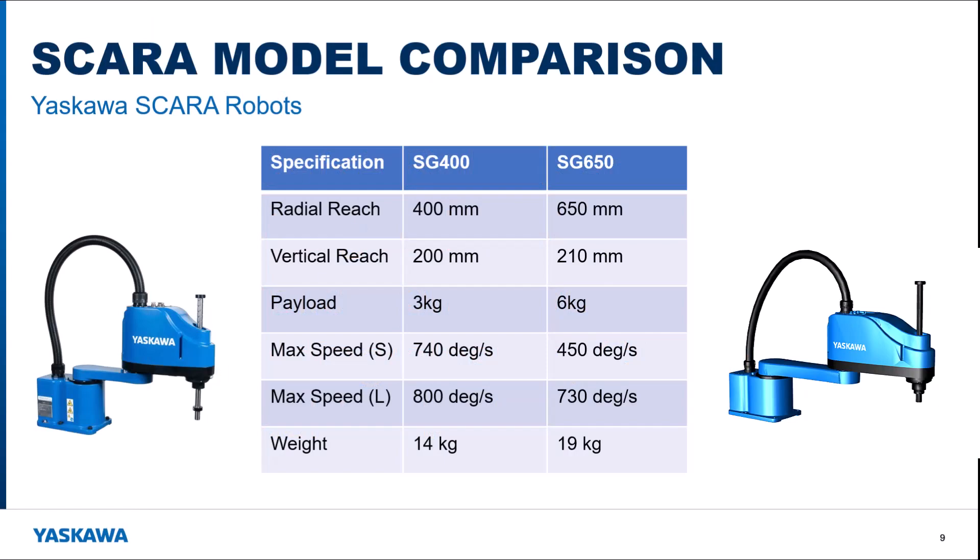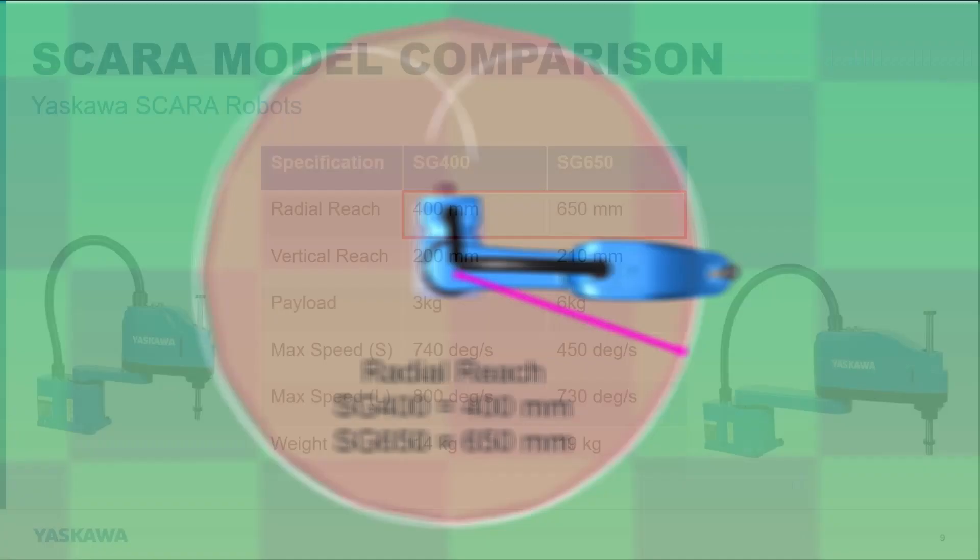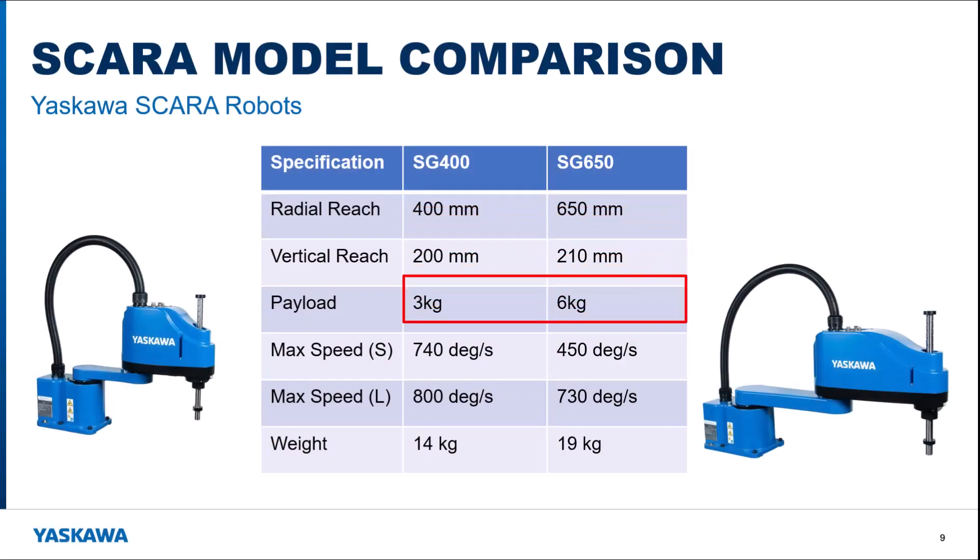Let's take a look now at Yaskawa's SCARA robot product line, which consists of the SG400 and the larger SG650. The obvious difference between these two robots is the radial reach: 400mm for the SG400 and 650mm for the SG650. The SG650 can move twice the payload, and the maximum rotational speed of each arm is a little lower, and the weight is a little higher.